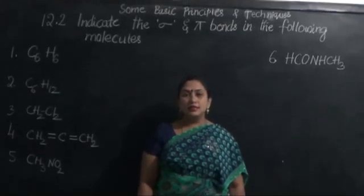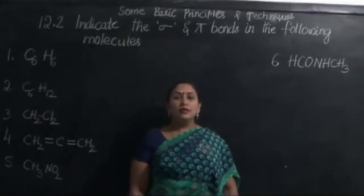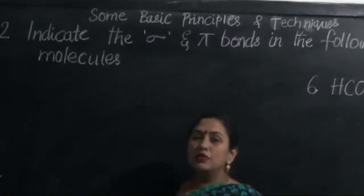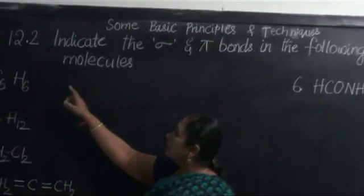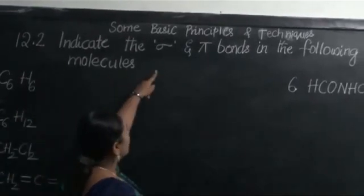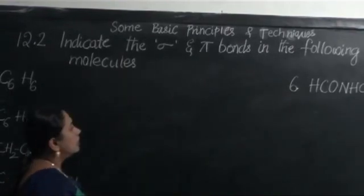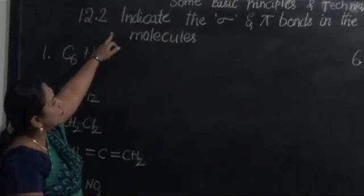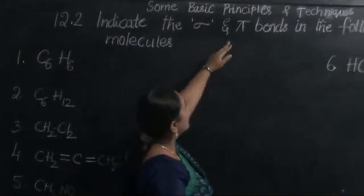Now, let us discuss some of the exercise questions from the NCERT syllabus on the topic of some basic principles and techniques in organic chemistry, the concepts of which we learnt in the previous class. Question number 12.2 is asking us to indicate the sigma bonds and the pi bonds in the following molecules. They have given us six molecules and we need to write the number of sigma bonds and the number of pi bonds.